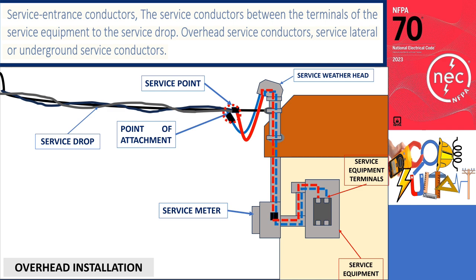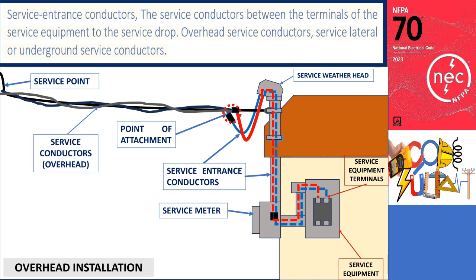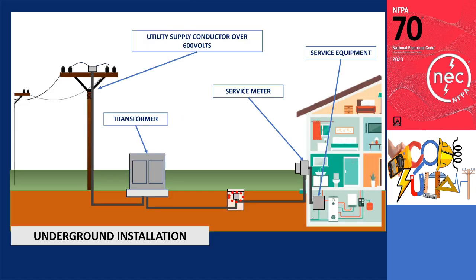Whether it is a service drop or service conductors, the term 'service drop' remains consistent, regardless of whether the service point originates from a utility transformer or pole. In a separate illustration, the service laterals are connected to the transformer, and the service point is located at the handhole.